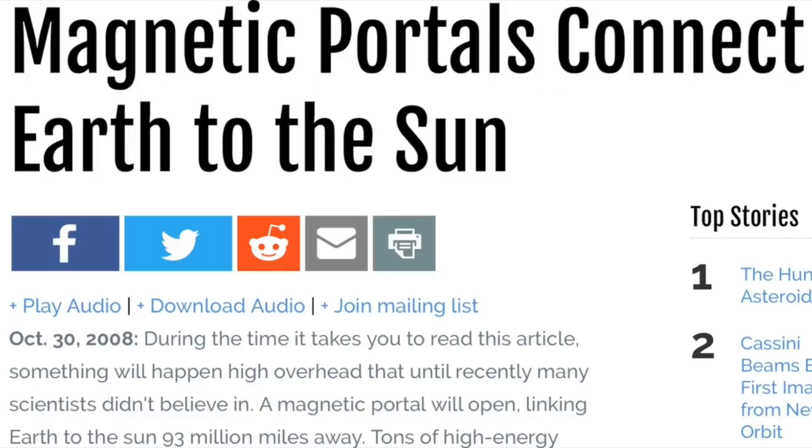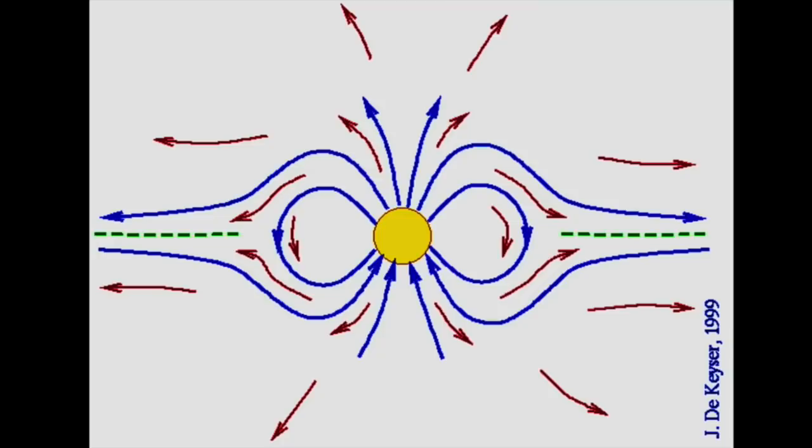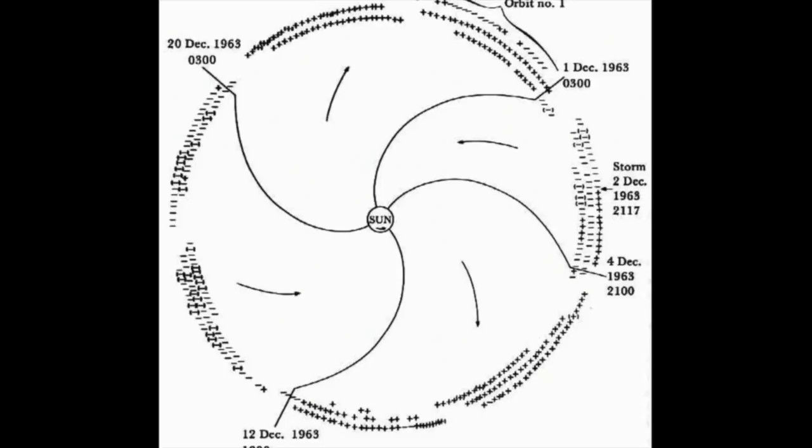And when we recall the ease with which a slight coronal magnetic field disruption can trigger a solar flare below, the importance of the return fields and return currents to the sun to solar flaring activity becomes quite obvious.